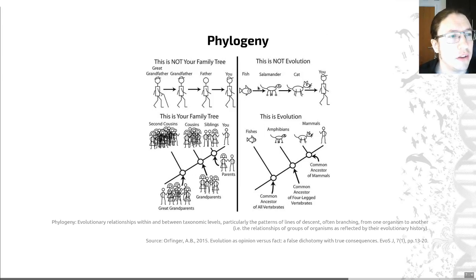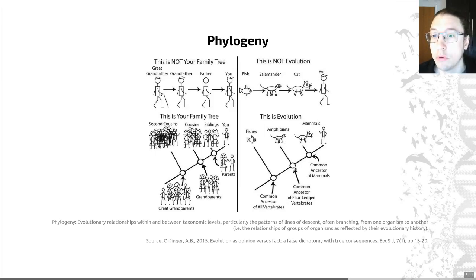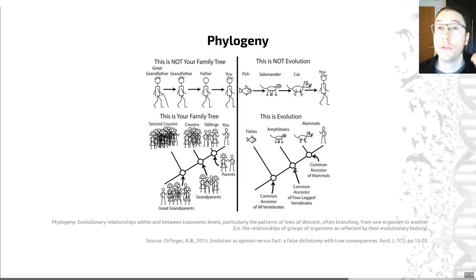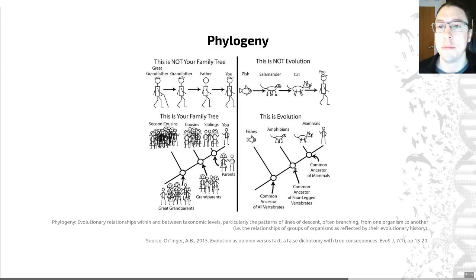We have not descended from a fish to a salamander to a cat to us. Rather, we share a common ancestor with all other mammals, and those share a common ancestor with other four-legged vertebrates and so on. So humans did not evolve from chimps — we share an ancestor with chimps but we did not evolve from them. We have a shared evolutionary origin, a common ancestor between the two.